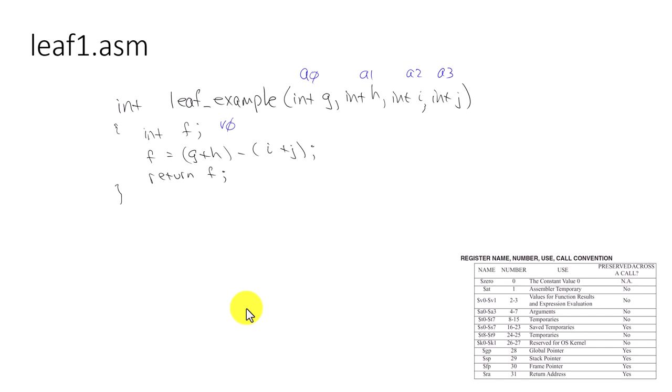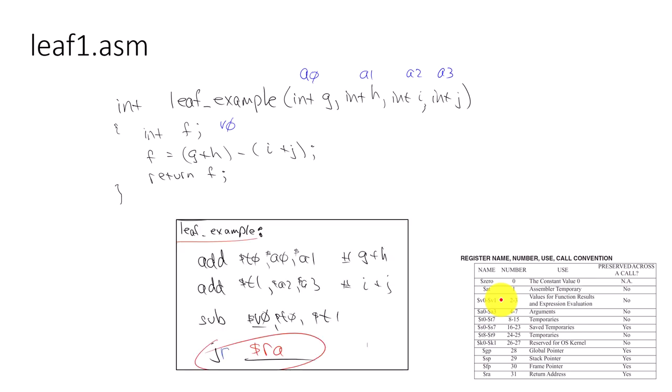In the prior video, we learned about functions and how we can implement C-like or Java-like functions using arguments passed through or placed in the A registers, and the values that would be returned through the V0 and V1 registers. So now, what if we want to work with more registers than just A0, A1, A2, and A3, and use some of the other general purpose registers — some of the other 32 registers?